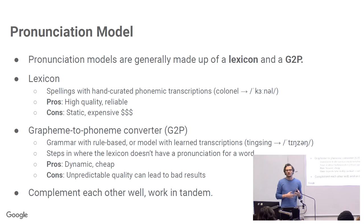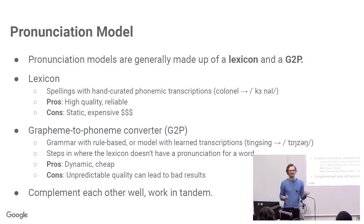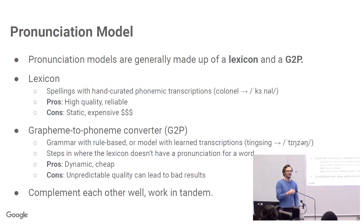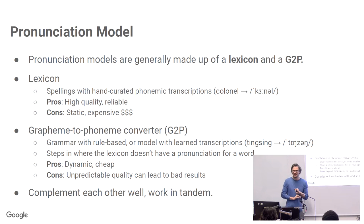To complement the lexicon, we also have another component called a G2P, or grapheme-to-phoneme converter. That's a rule-based or machine-learned model which will produce phonemic transcriptions for words that aren't in the lexicon. Take the word 'tingsy', which apparently means flirting in London slang — it's unlikely to be in the lexicon. Where the lexicon falls down, the G2P will kick in and try to produce a useful phonemic transcription for the spelling. The pros of G2P are that it's dynamic and can produce a pronunciation for any word; it's cheap, but unpredictable and variable. In a production system, you really need both — they complement each other.